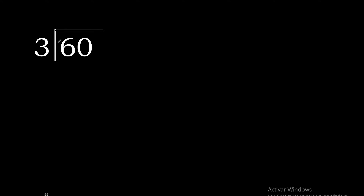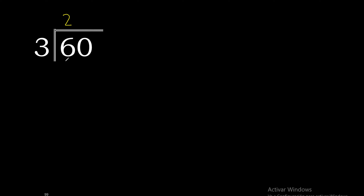6d divided by 3. 6 is not less than 3, therefore with 6: 3 multiplied by 3 is 9, excessive. 3 multiplied by 2 is 6. 6 minus 6 is 0. Eliminate: 0 is less than 3.